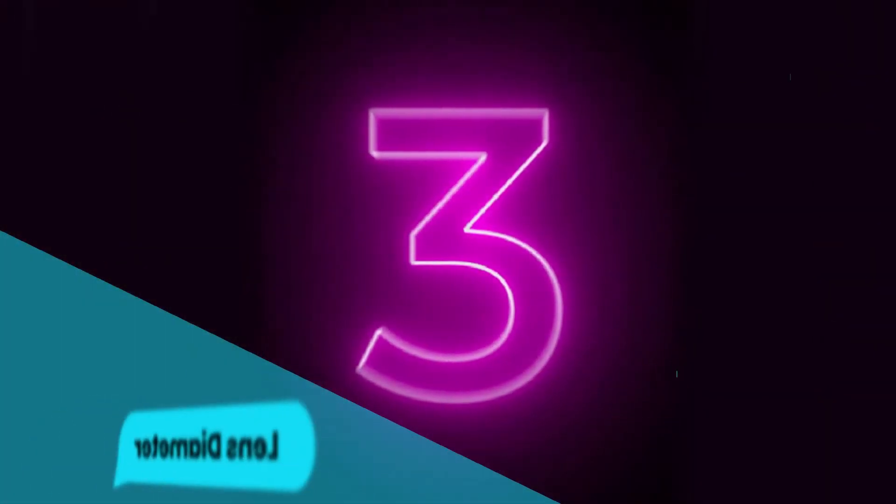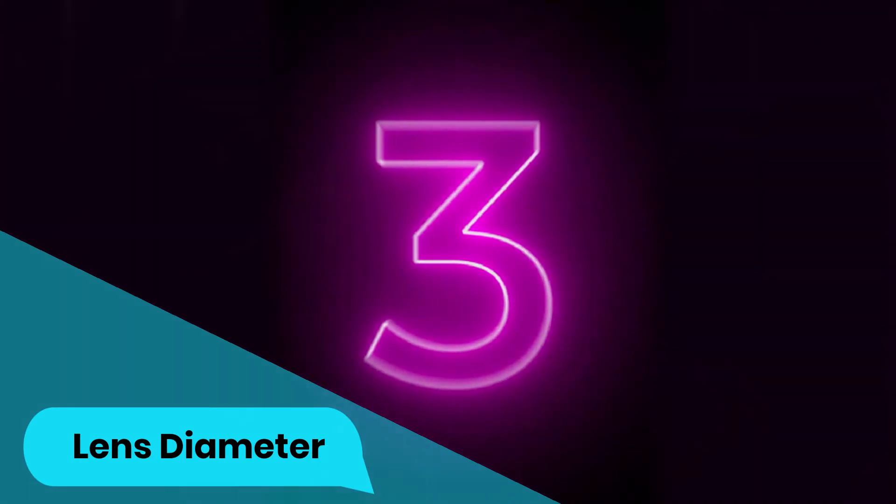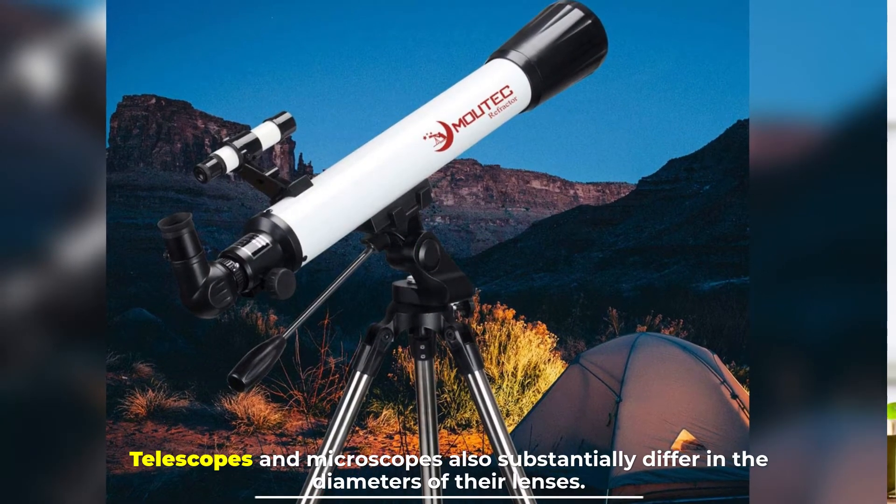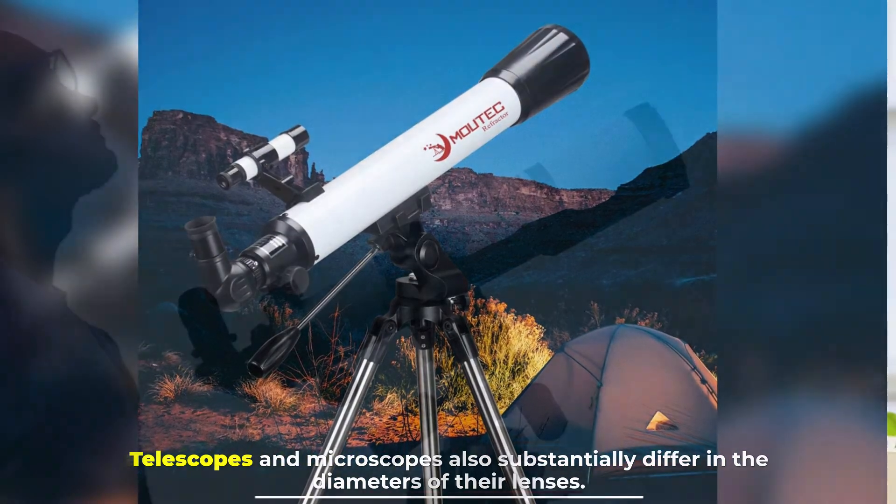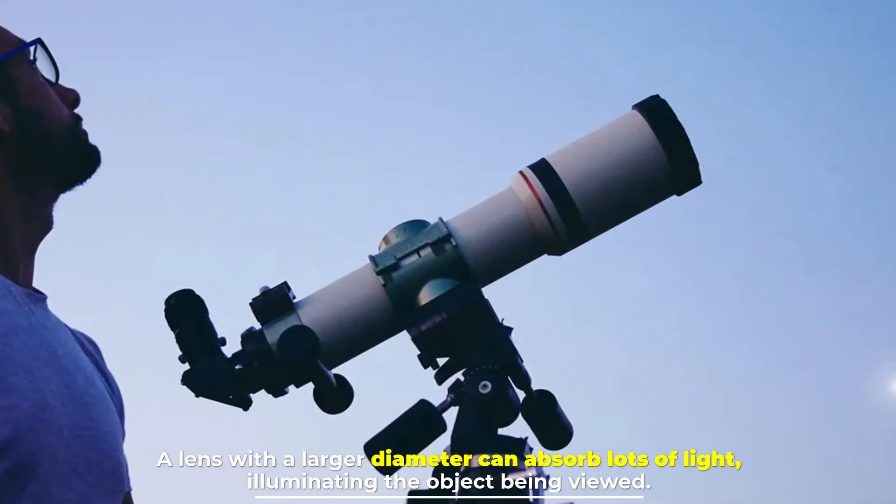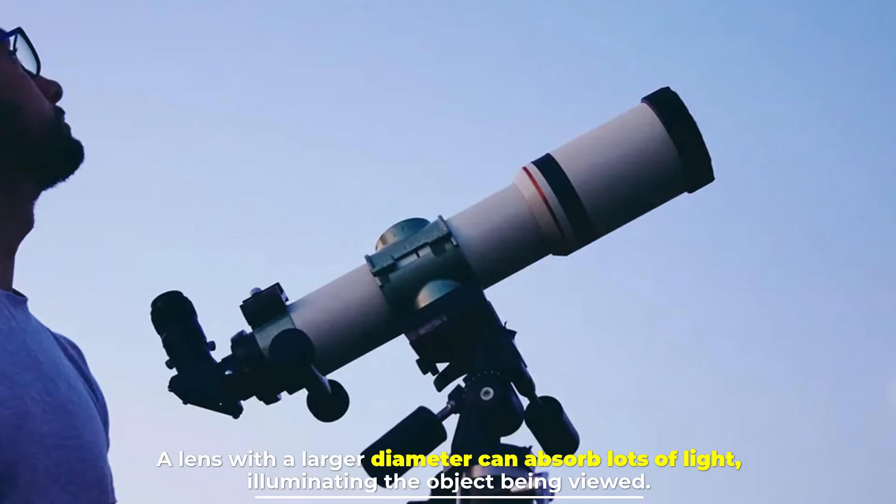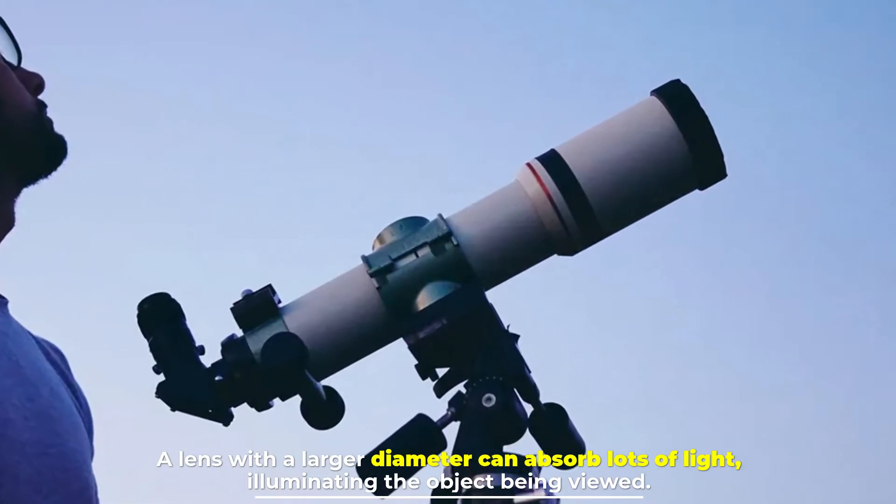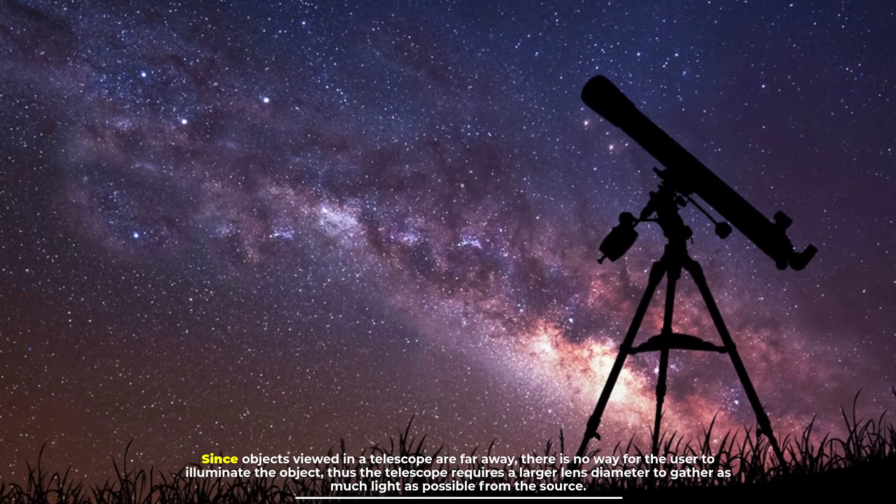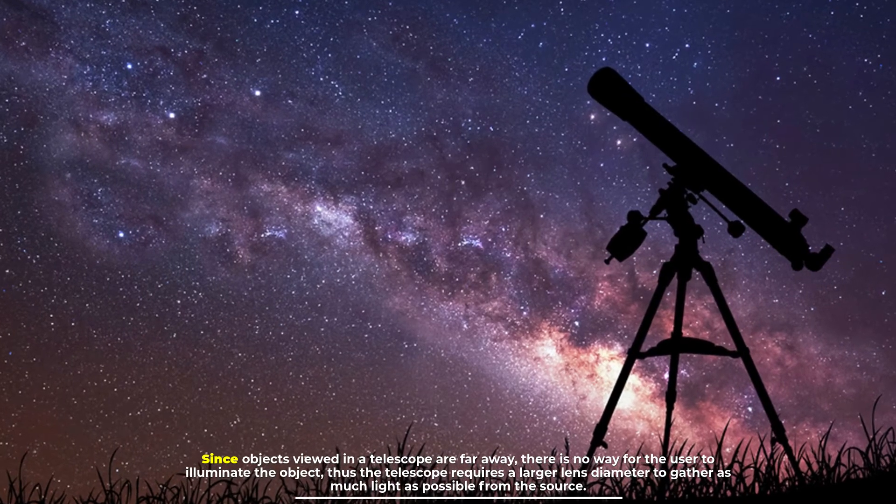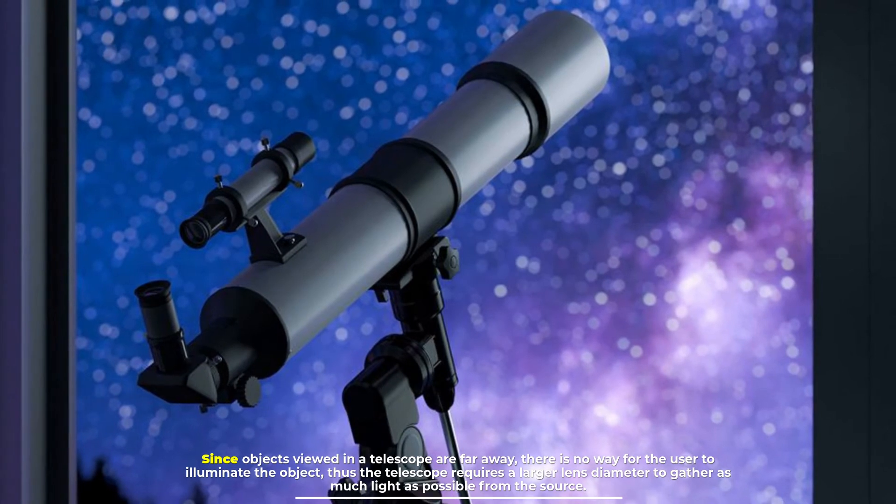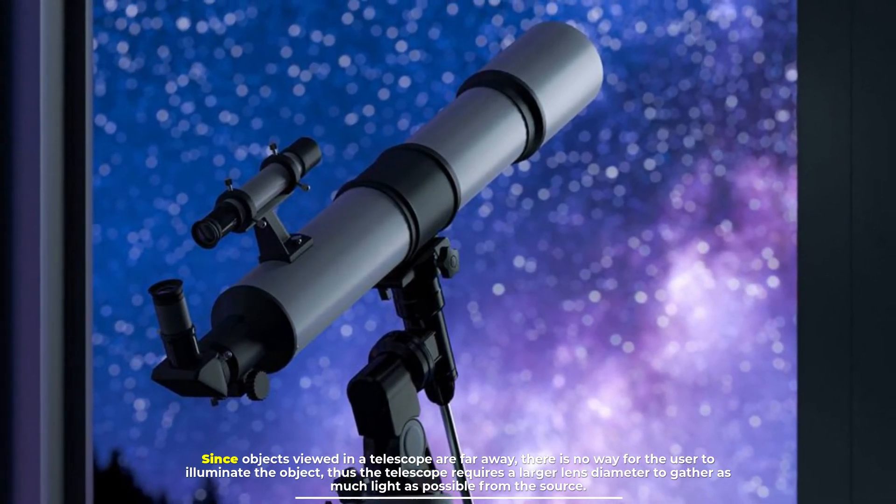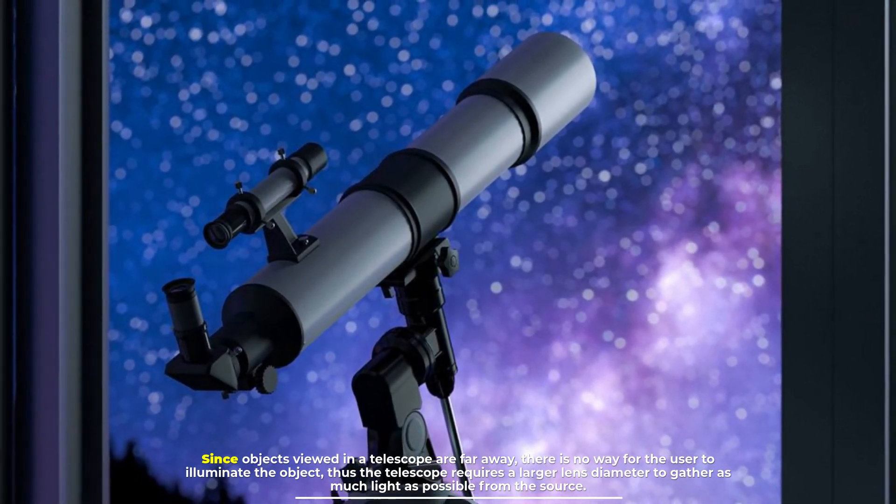Number three: lens diameter. Telescopes and microscopes also substantially differ in the diameters of their lenses. A lens with a larger diameter can absorb lots of light illuminating the object being viewed. Since objects viewed in a telescope are far away, there is no way for the user to illuminate the object. Thus the telescope requires a larger lens diameter to gather as much light as possible from the source.